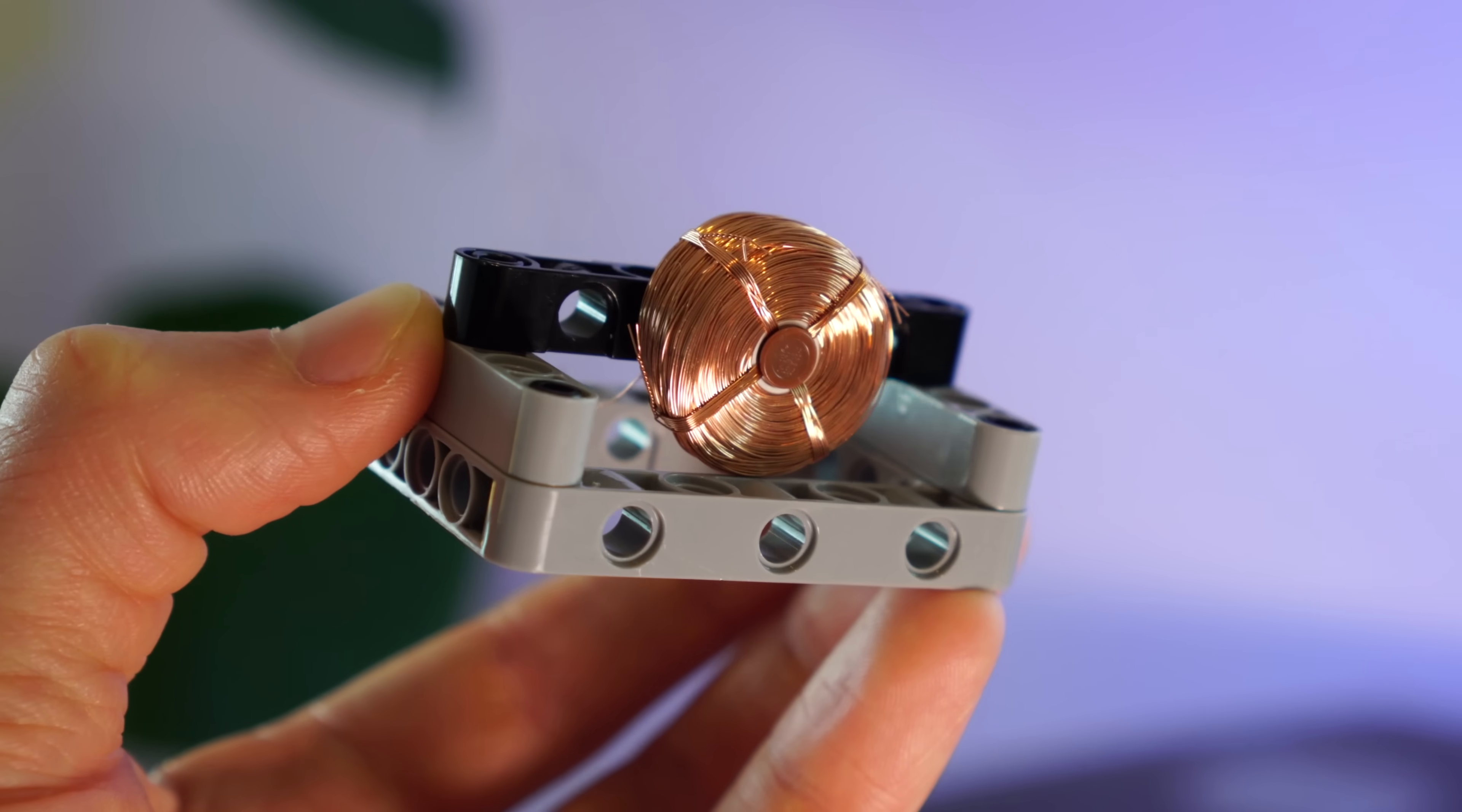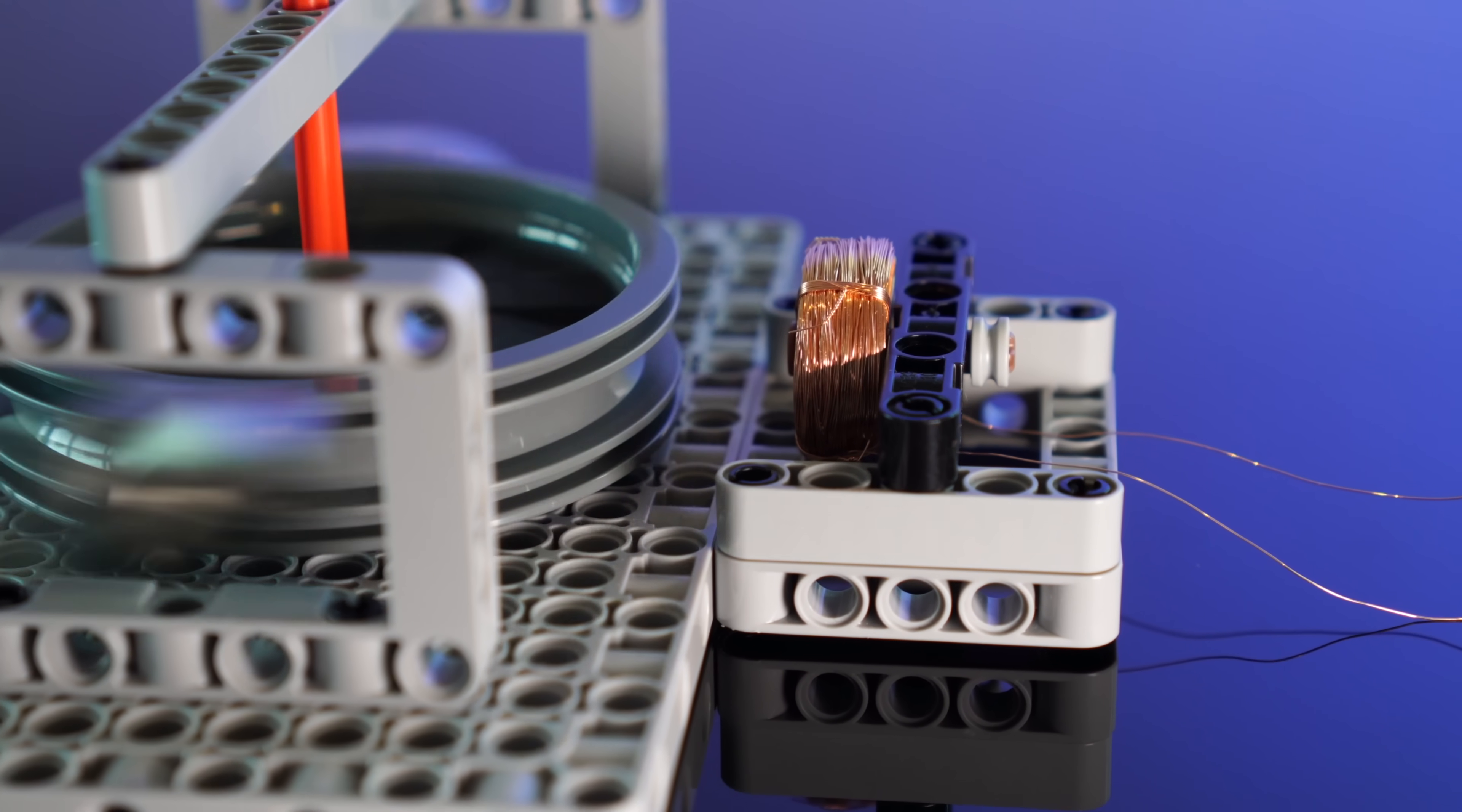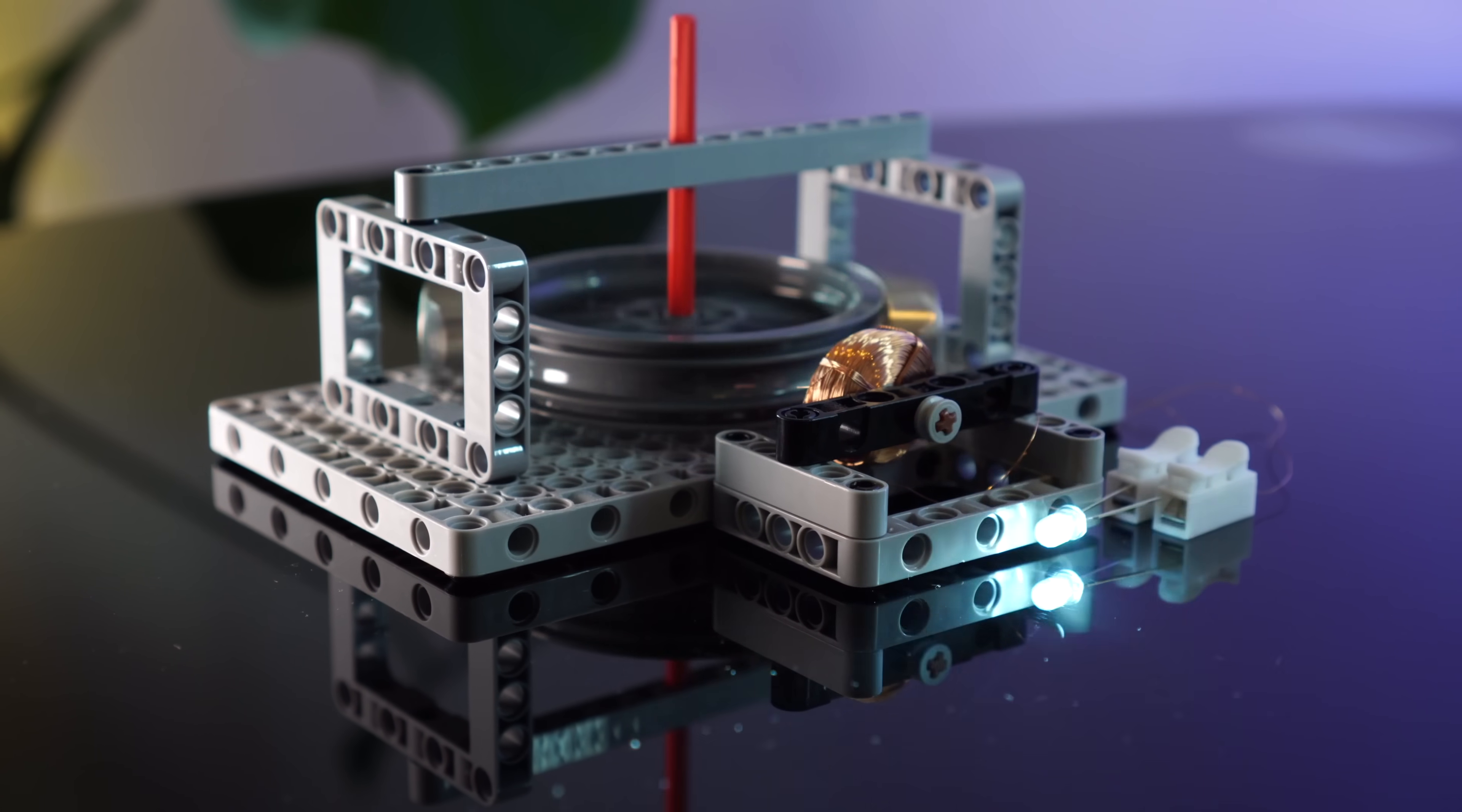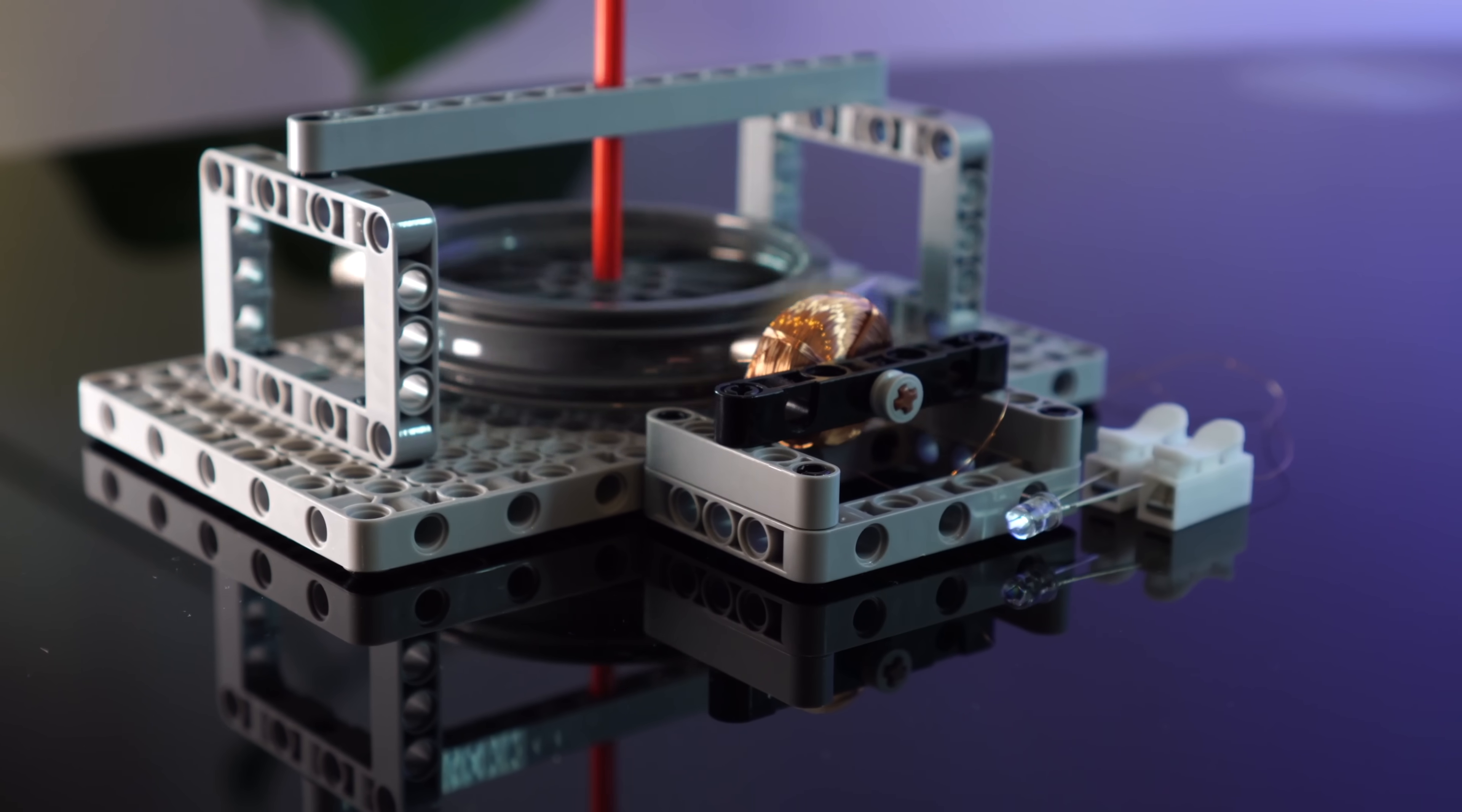Wind up some wire, stick it near the magnets, and now when we spin the rotor we get a small charge. Chuck on an LED and now we can visualize the generator in action. You can see here it's flashing as the magnets pass the coil producing an alternating current.